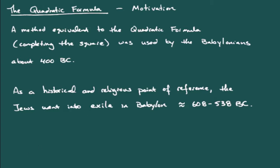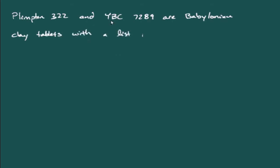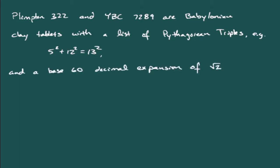Going back a little bit further, if we look at a couple of Babylonian clay tablets, the Plimpton 322 and YBC 7289, these are clay tablets, and on Plimpton 322, we find a list of Pythagorean triples, so things like 5 squared plus 12 squared is 13 squared. And on YBC 7289, we find a base 60 decimal expansion of the square root of 2.